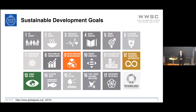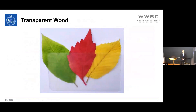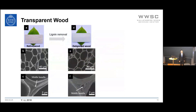Wood from trees is a renewable material combined with low environmental impact and excellent mechanical performance. Transparent wood is an emerging material that combines optical functionality and good mechanical performance. The typical fabrication process includes lignin removal to decrease light absorption in the wood template. During this treatment, the wood structure is well preserved and porosity is increased due to the removal of lignin.